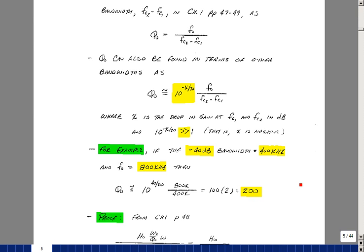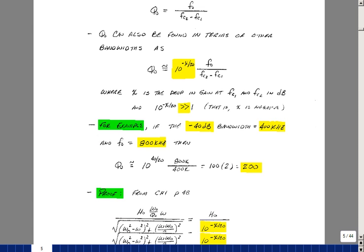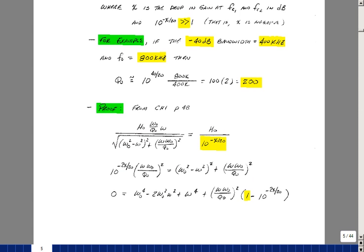The reason I want to do this is that this is how the IF amplifiers are set up, so that we would reject the nearest radio station to the one we're receiving by at least 40 dB. The way we can show this is the same way we did in chapter 1 on page 48. If we take the magnitude of the bandpass filter and set it equal to the amount that we're going to drop by, if we're going to drop by 40 dB, this is going to be 10 to the 2.